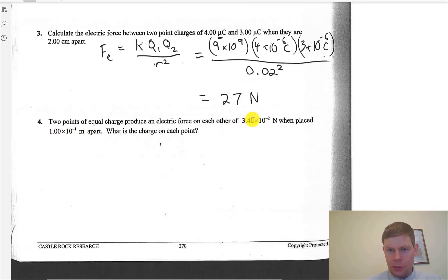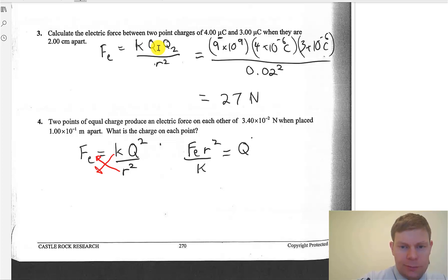So, two points of equal charge produce an electric force in each other of 3.4 times 10 to the minus 2 when placed, basically, 10 centimeters apart, 0.1 meters. What's the charge in each point? Again, we've got the same formula, but each charge is the same. They're equal charge. So, for this guy, we can do a little trick. We can say, hey, our electric force equals K times Q squared, because it's the same charge. So, we don't have to treat them differently. Divided by R squared. And so, we can rearrange this to solve for Q. So, I would kick this guy up. I know my algebra trick, if everything's multiplying, is just moving things diagonally across the equal sign. So, I would say, your FE times R squared all over K equals Q squared.